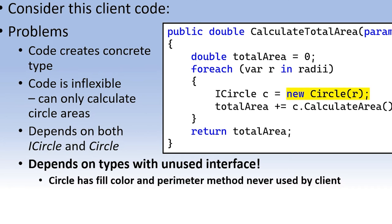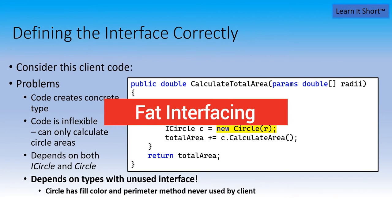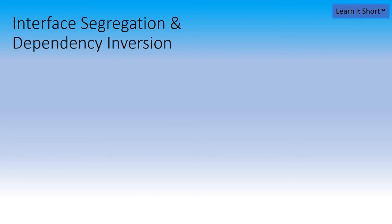We only require one method and that's calculate area. Yet we are dependent on a type that has a bunch of other capabilities as well. Something we call fat interfacing. And it is a problem because now we require something that is more complex and more involved than what's really necessary. And that's really the reason that we're motivated to create the interface. So let's look at that and what we need to do to actually correct these problems that we talked about.